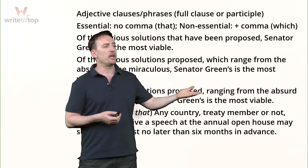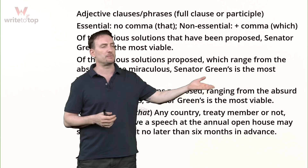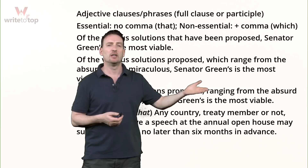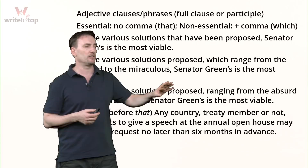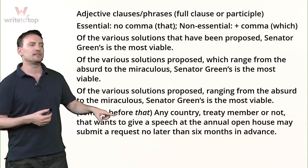When you reduce that clause to a participle: 'Of the various solutions proposed, ranging from the absurd to the miraculous.' I take 'which' and 'range' and combine them into the active participle 'ranging.' It is still a non-essential phrase, so I still need the comma before and after.